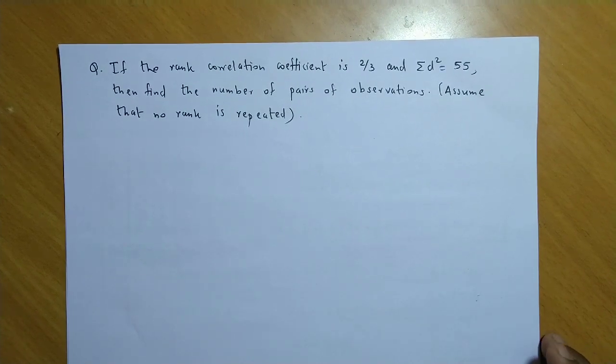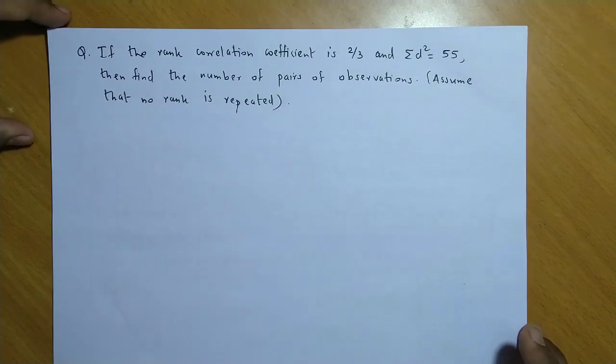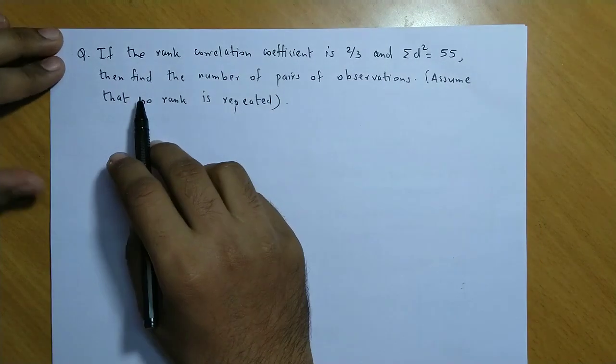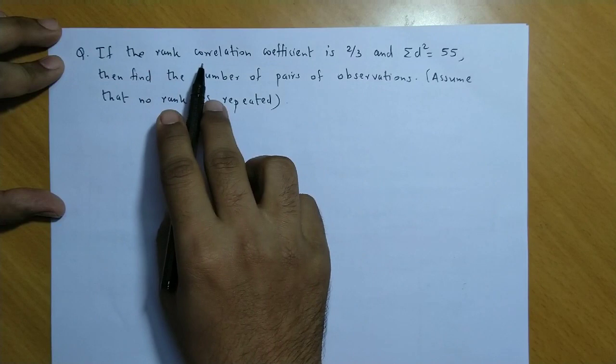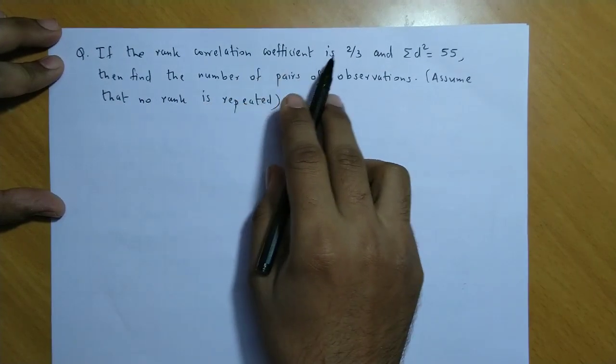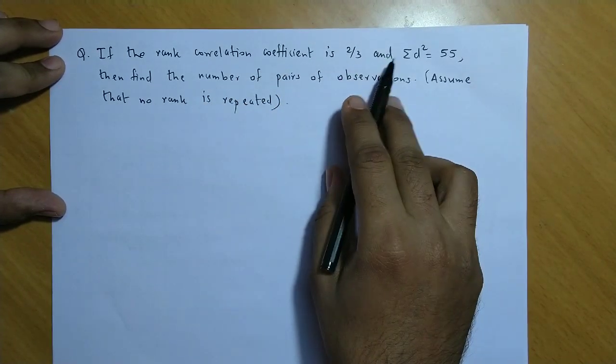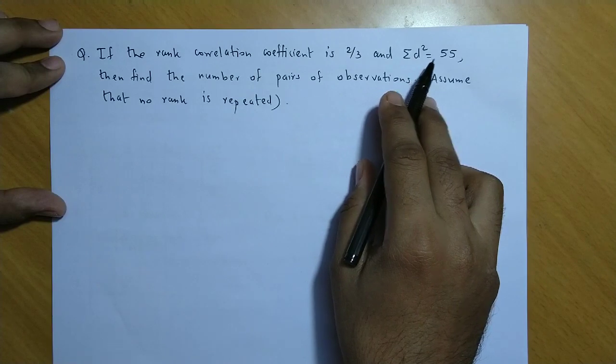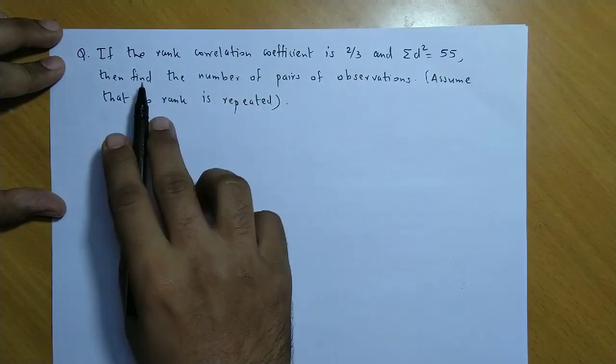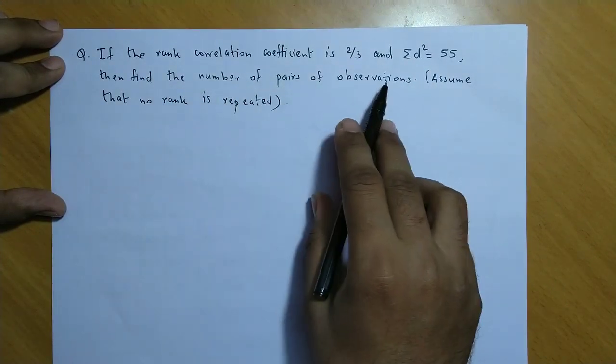Ab rank correlation se related ek aur example hum solve karenge. Question hai: if the rank correlation coefficient is 2/3 and summation d square equal to 55, then find the number of pairs of observations.